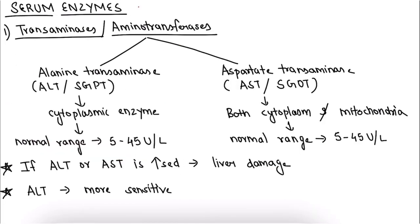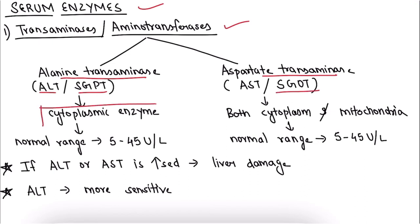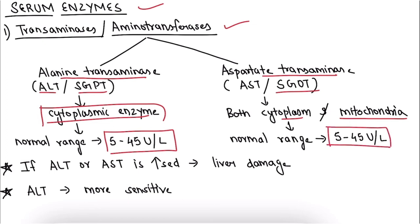Now let's study the serum enzymes. The first one is transaminases, also called aminotransferases, which are basically found in the liver. If there is any damage to the liver, these enzymes may be released into circulation, indicating a problem. The two enzymes are: alanine transaminase (ALT), previously called SGPT, and aspartate transaminase (AST), previously called SGOT. ALT is a cytoplasmic enzyme while AST is found in both cytoplasm and mitochondria. The normal range for both is 5 to 45 units per liter. If ALT or AST is increased, there is damage to the liver. Out of both, ALT is more sensitive.